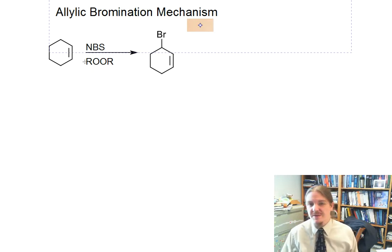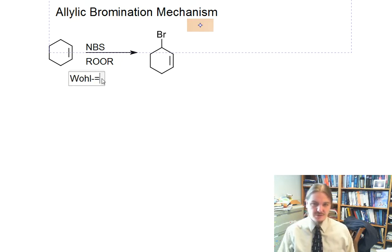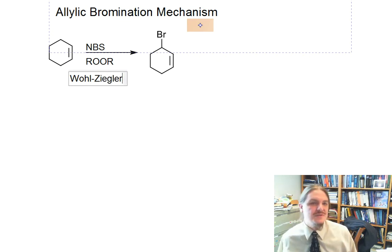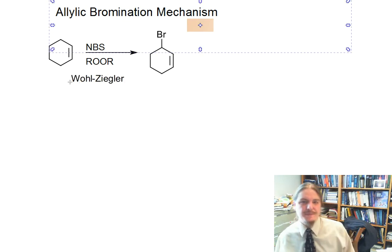Hello. In this video, I'm going to talk about the mechanism of allylic bromination and I'm going to talk about a very specific variation called the Wohl-Ziegler bromination, which uses n-bromo succinamide and uses a radical initiator.